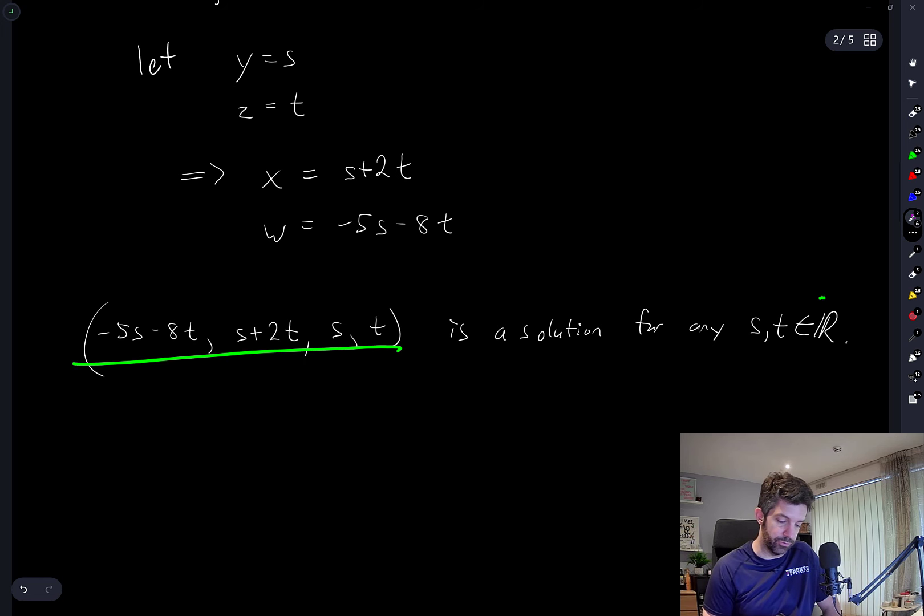And this thing will then be a solution. So let S be equal to 1 and T be equal to 0, this becomes negative 5, that's a 1, that's a 1, and that's a 0.